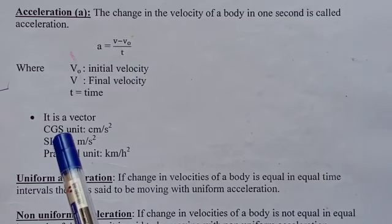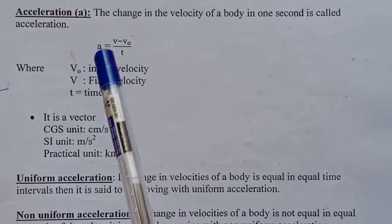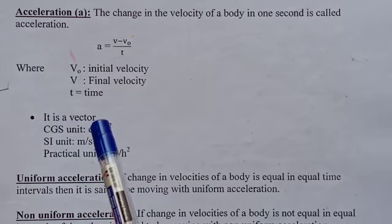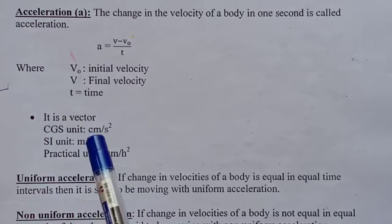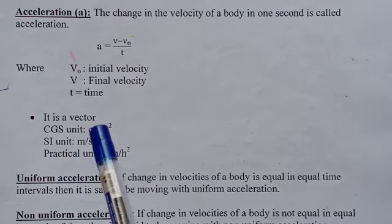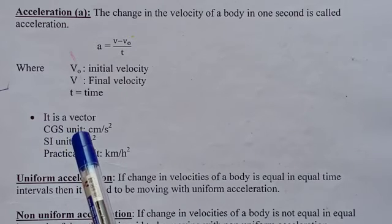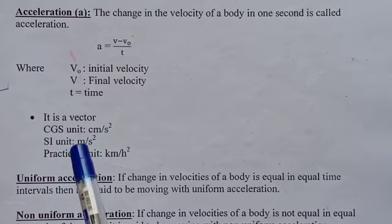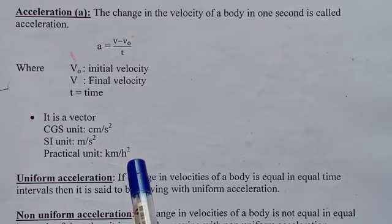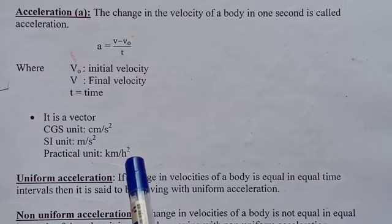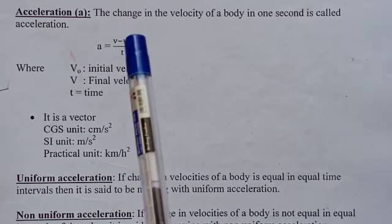Acceleration is also a vector quantity, since velocity is a vector quantity. In CGS units, the unit of acceleration is centimeter per second square. In SI units, it is meter per second square. In practical units, it is kilometer per hour square.